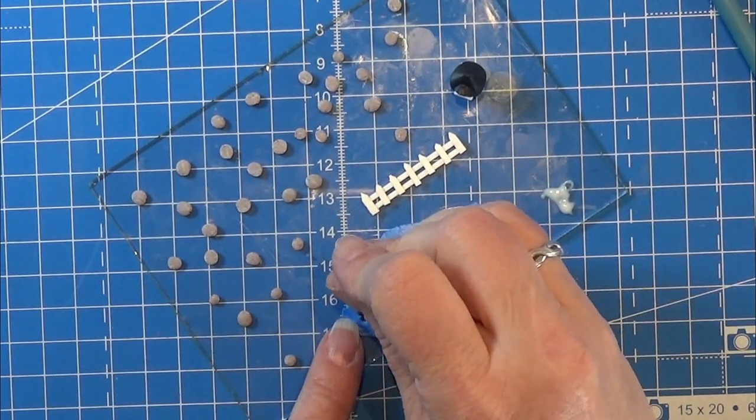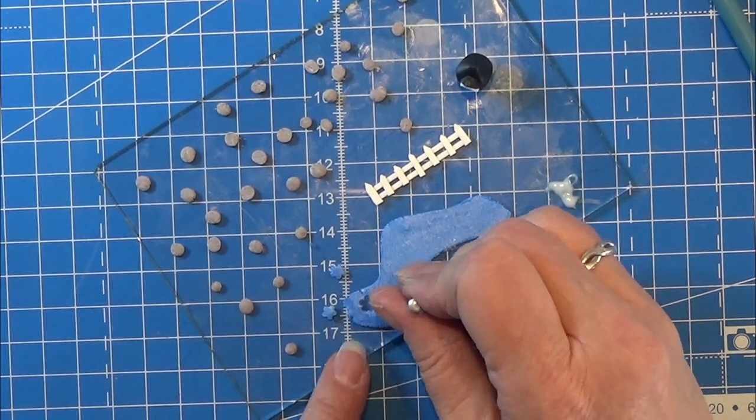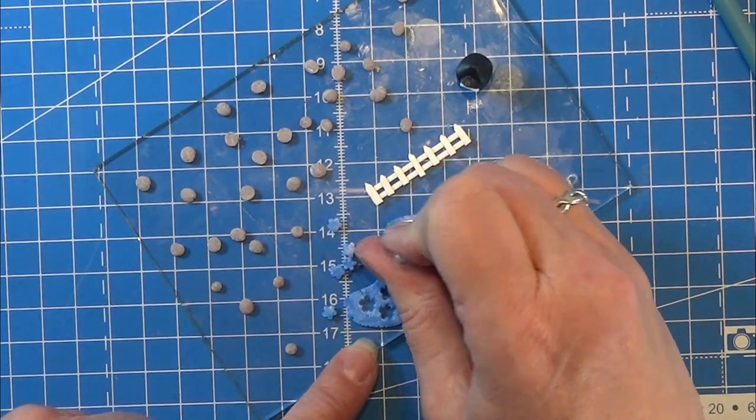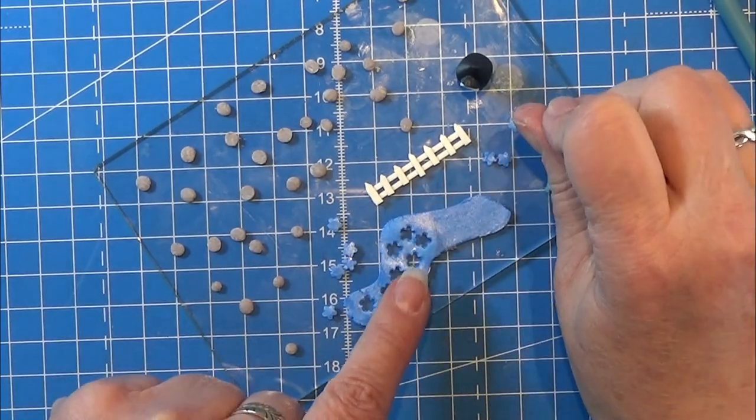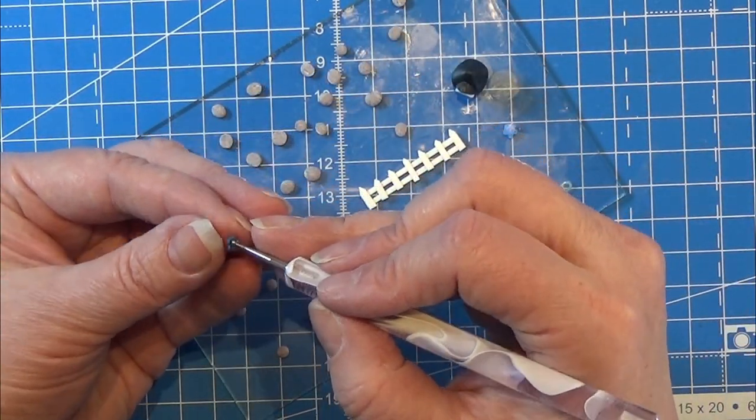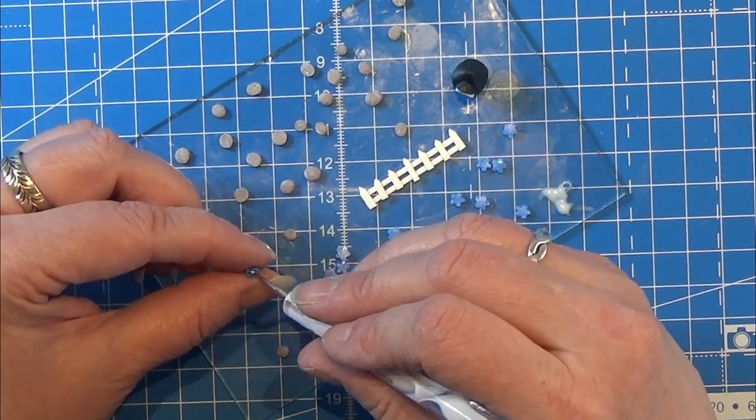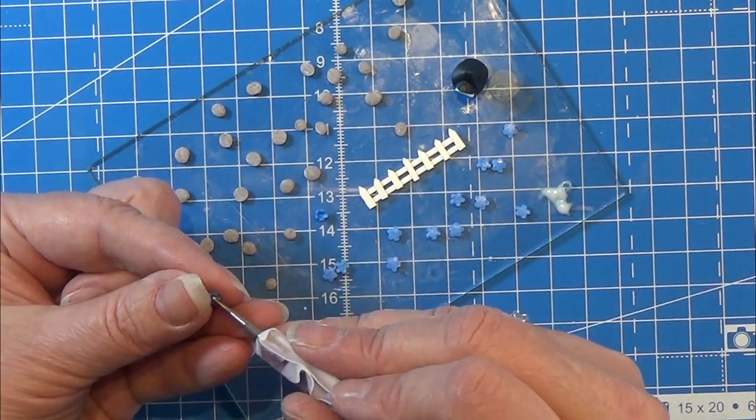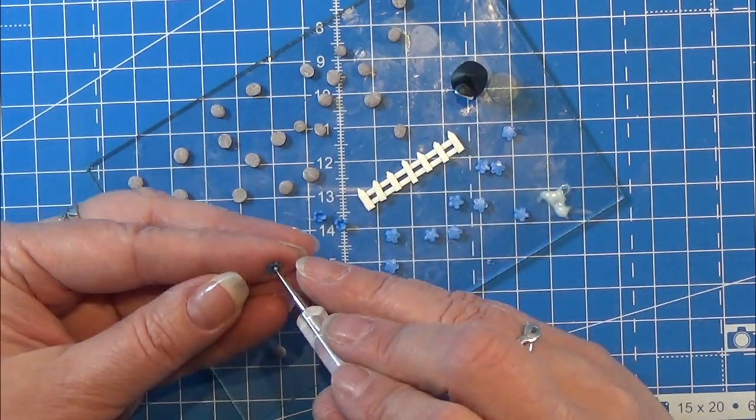Now I am taking some shimmery blue clay and poking out some flowery shapes from that. I want to make some smaller flowers with this. Then I am taking my dotting tool and squeezing that into the middle of the flower, so the leaves kind of wrap around the little dot on my dotting tool. This gives the flower a little more shape.